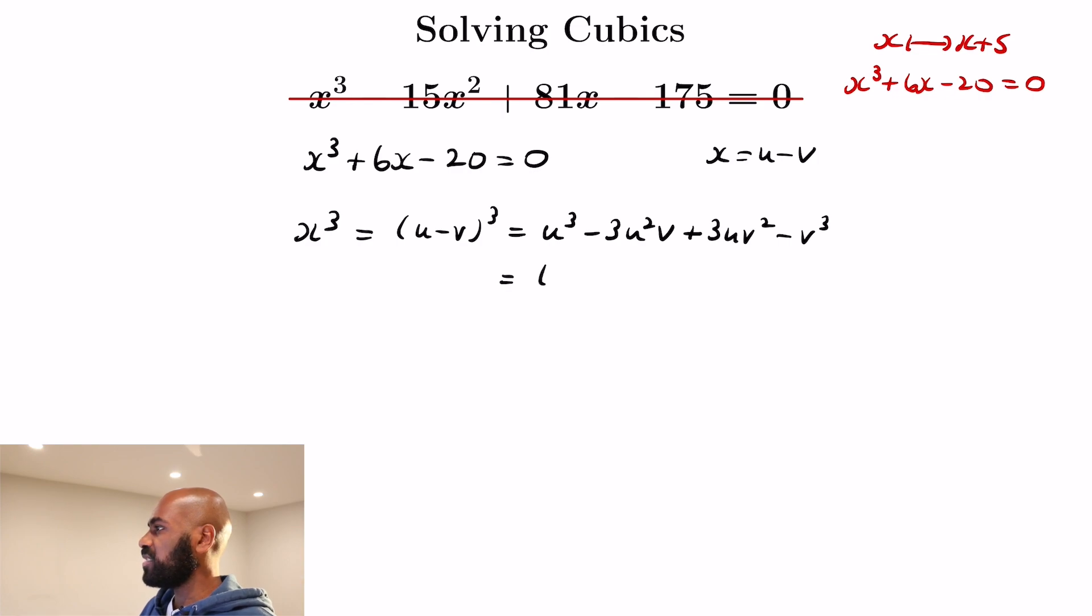And now we'll group things together. We have the u cubed minus v cubed part we'll put together, and then we have a minus 3uv times the quantity u minus v. And u minus v itself is actually x.